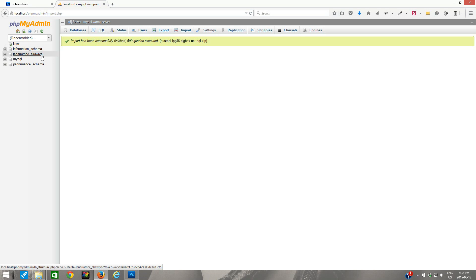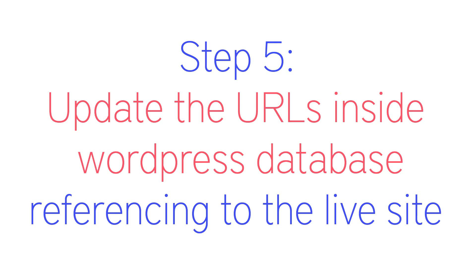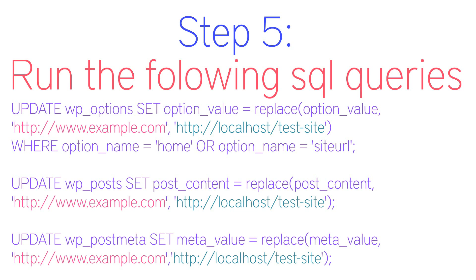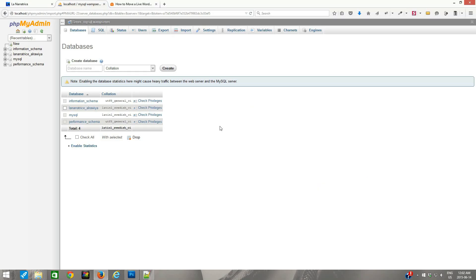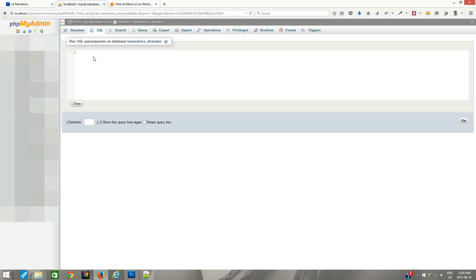Now that the database is all set up, we need to update the URLs inside the WordPress database which still refer to the live website. To update the URLs we have to run three SQL queries. These three queries will replace any occurrence of the live website URLs with the URLs of the website hosted on localhost. To run these SQL queries, go to phpMyAdmin, click on the correct database, click on the SQL tab, type in your SQL query, and click the Go button to run it.